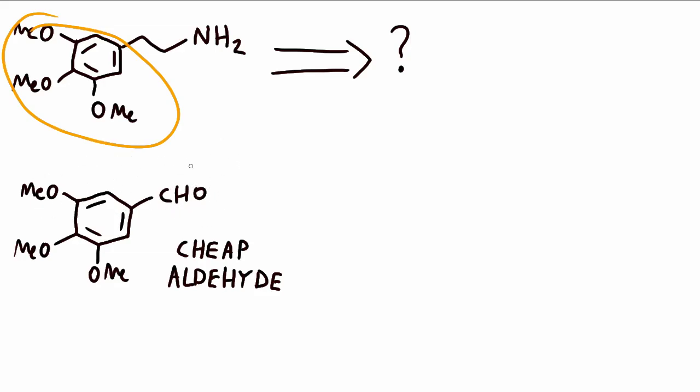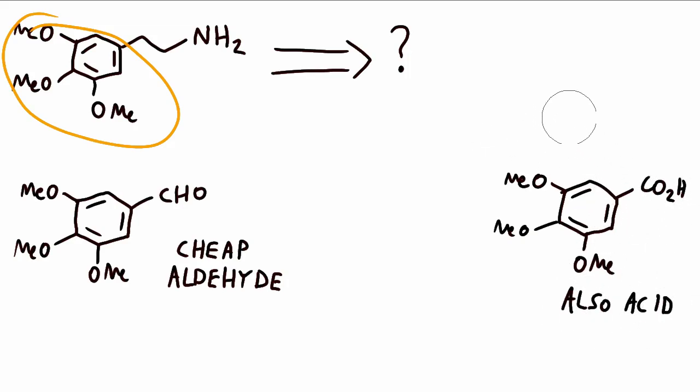So this aldehyde looks like a perfectly reasonable starting material, and because the aldehyde is cheap, then anything else closely related to it is also going to be cheap. So for example, this acid is also an abundantly available starting material.